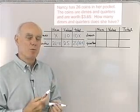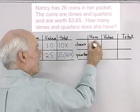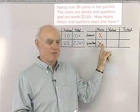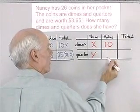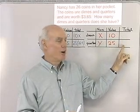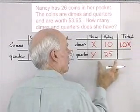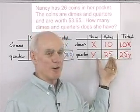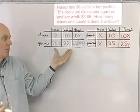Let's do the same table again but work with two variables instead of one. I'll let X be the number of dimes and Y be the number of quarters. A dime is still worth 10 cents and a quarter is still worth 25 cents, so the total value of the dimes is 10X and the total value of the quarters is 25Y. When I use two variables X and Y, I end up with a system of equations. When I use just one variable, I end up with just one equation.